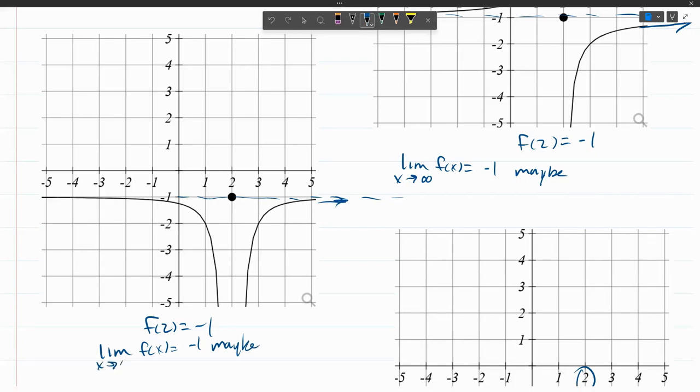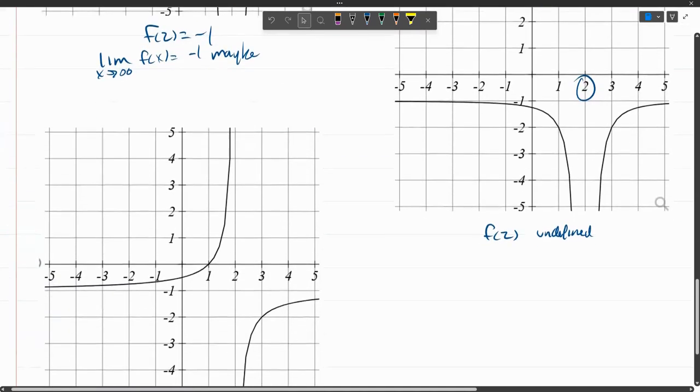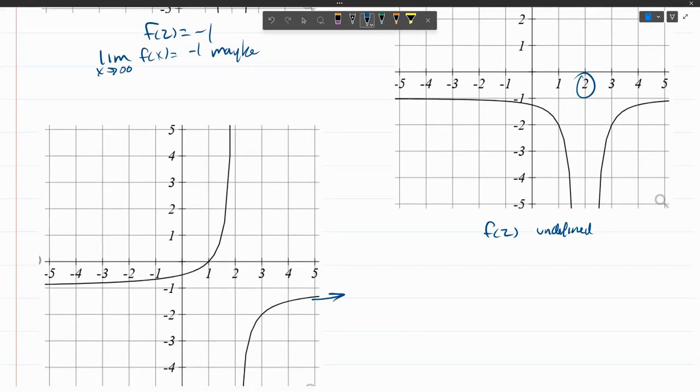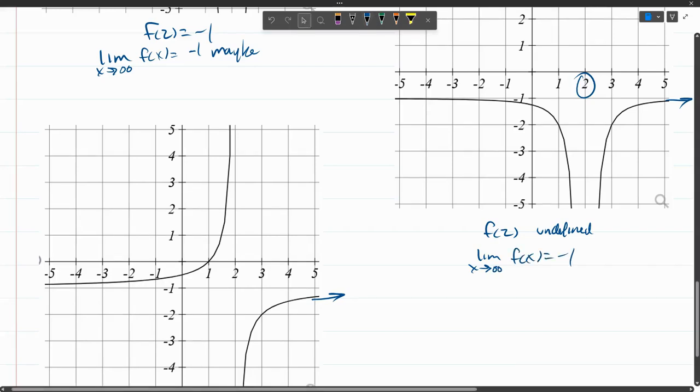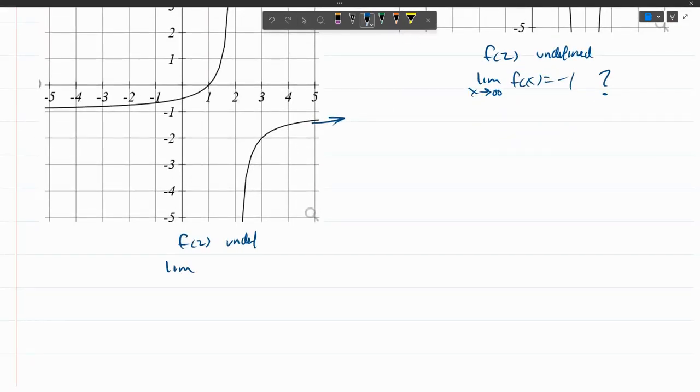And this is, of course, x approaches positive infinity. I'm going to keep going. It looks like both of these graphs here on the screen, if it kept going, it would look really similar, probably also approaching negative one. I'm going to just put a question mark because we're not sure. It does look like it, though.